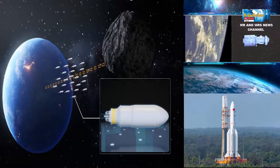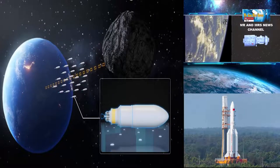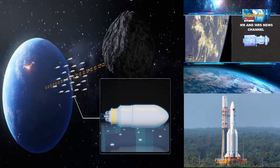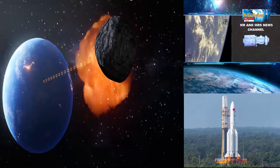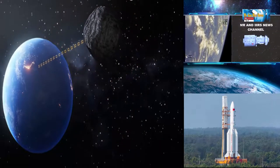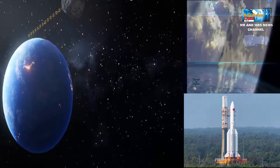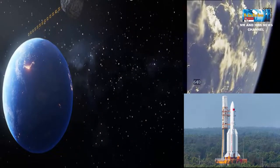Sistem pemantauan dan peringatan berbasis darat dan luar angkasa untuk asteroid akan dibuat untuk membuat katalog dan menganalisis asteroid yang menimbulkan ancaman bagi aktivitas luar angkasa umat manusia. Dan kemungkinan teknologi dan rekayasa yang relevan akan dikembangkan untuk menghilangkan ancaman tersebut.